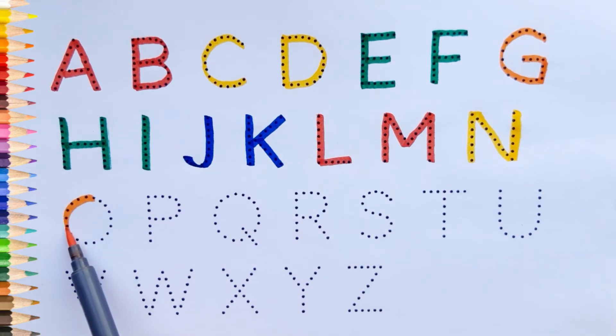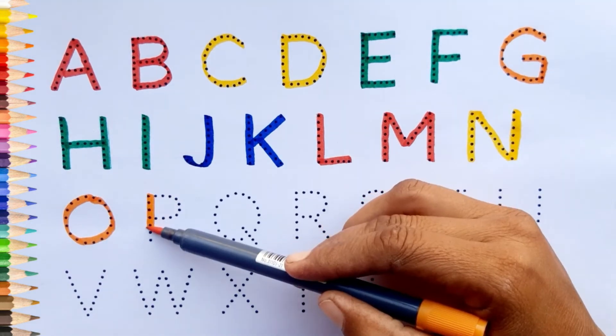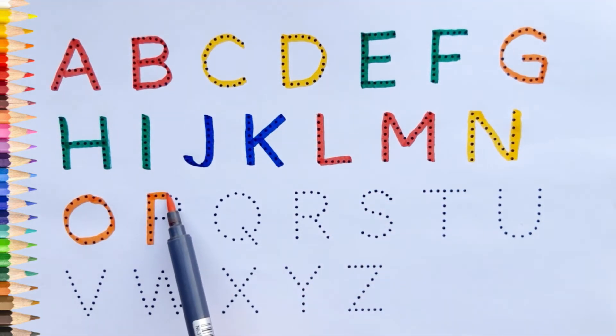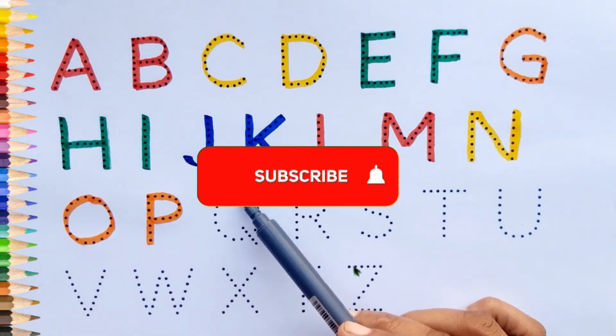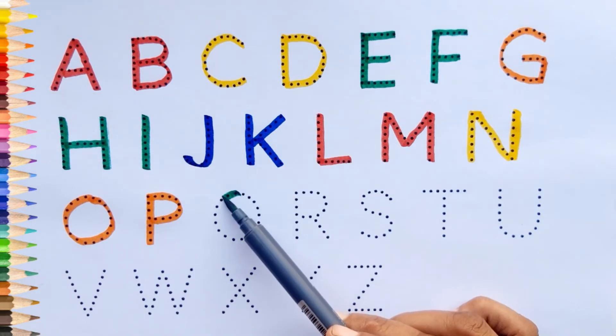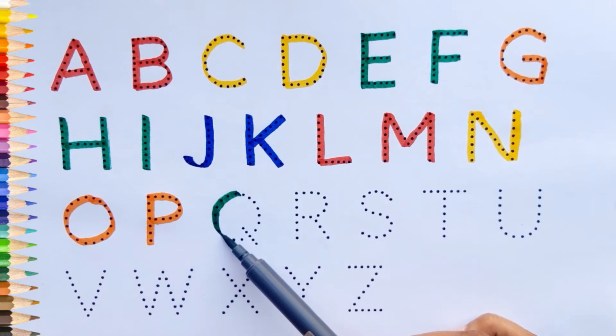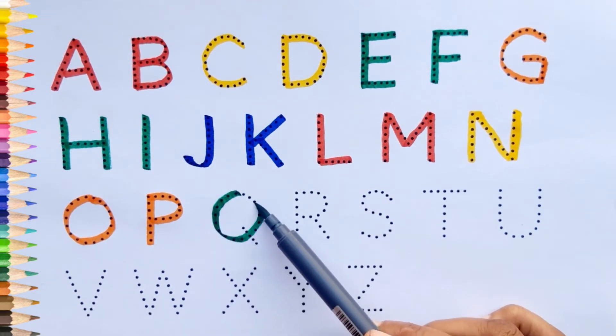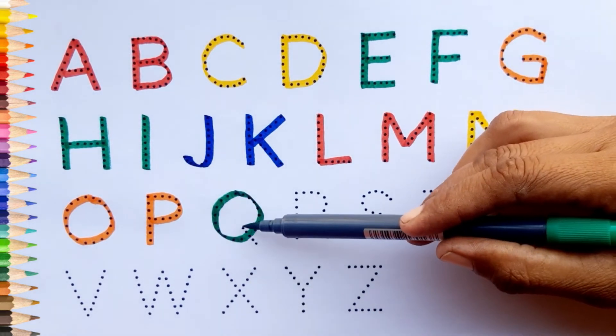Orange color. O. O for oval. P. P for parrot. Green color. Q. Q for coin.